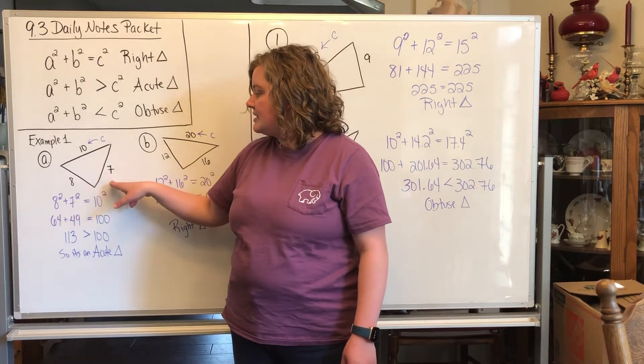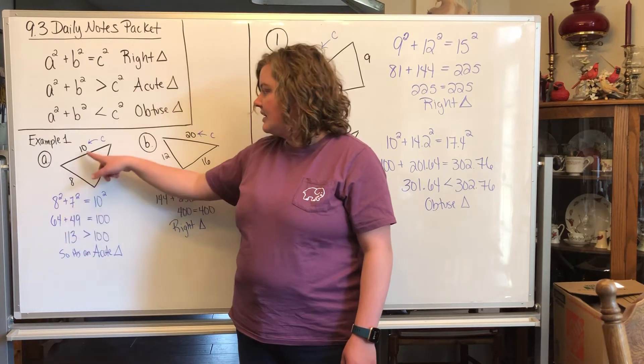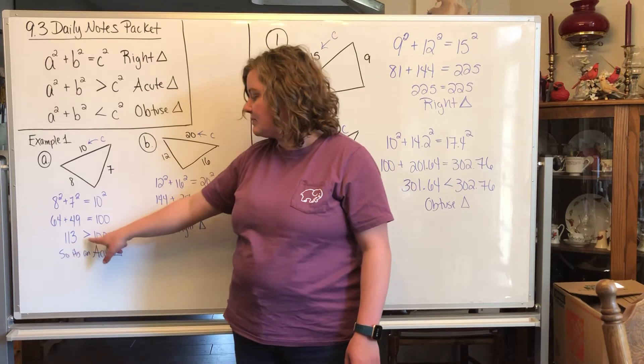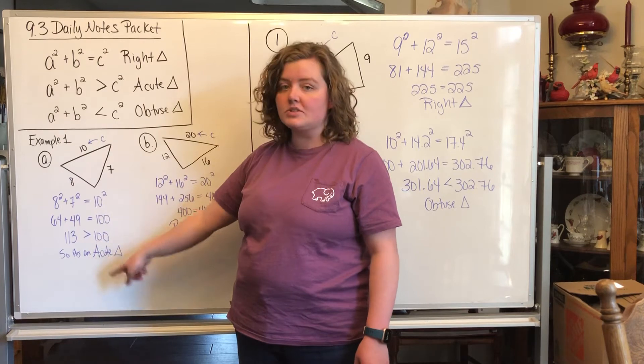So if we do 8² and 7² together, you end up getting 113, and then 10² gives you 100. So since 113 is bigger than 100, if it's bigger than your c², this is an acute triangle.